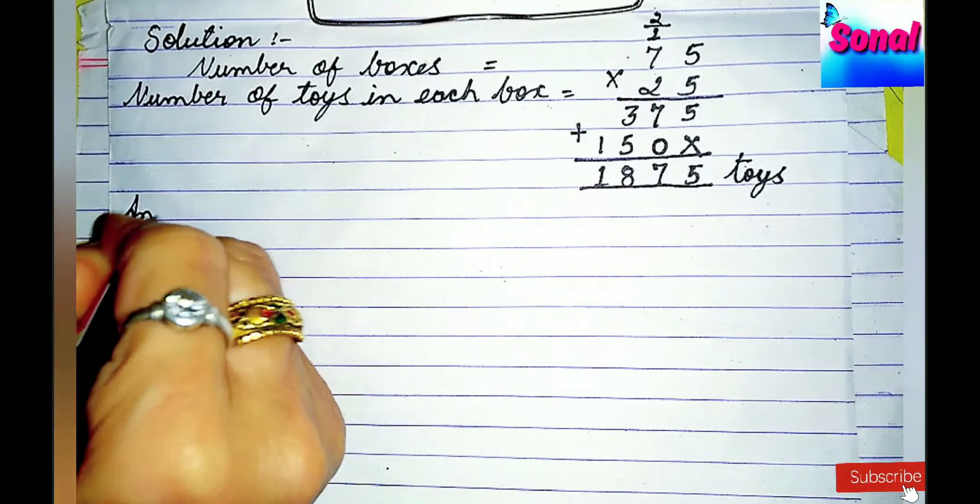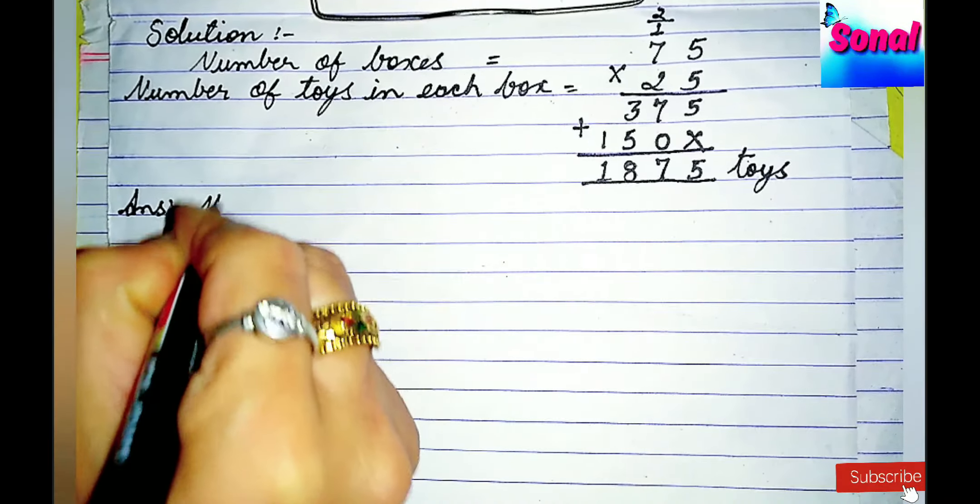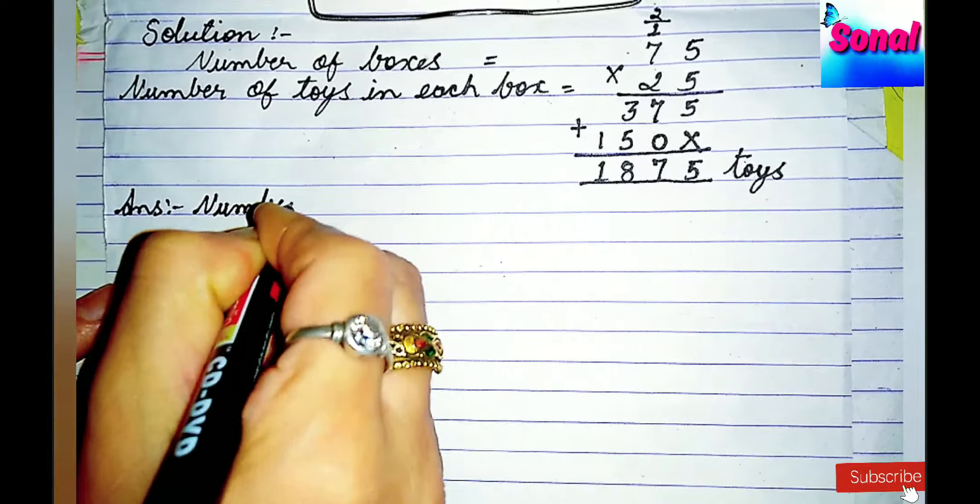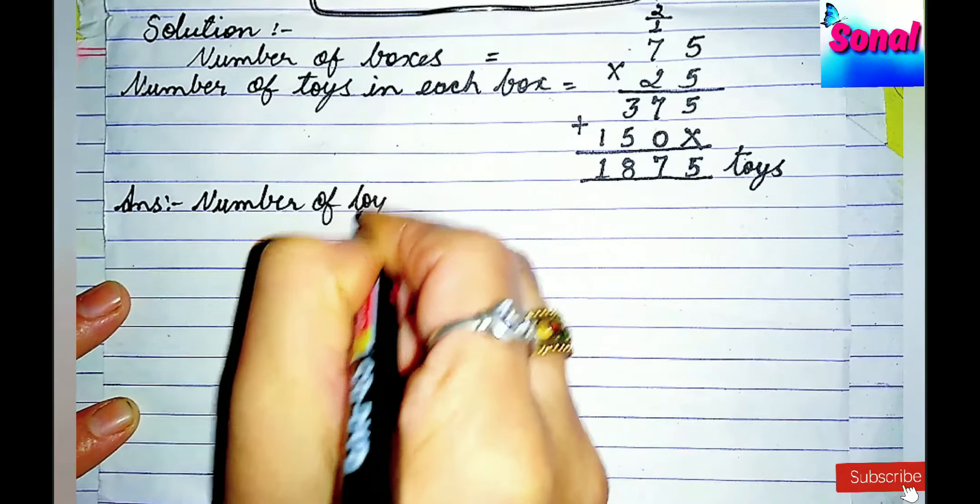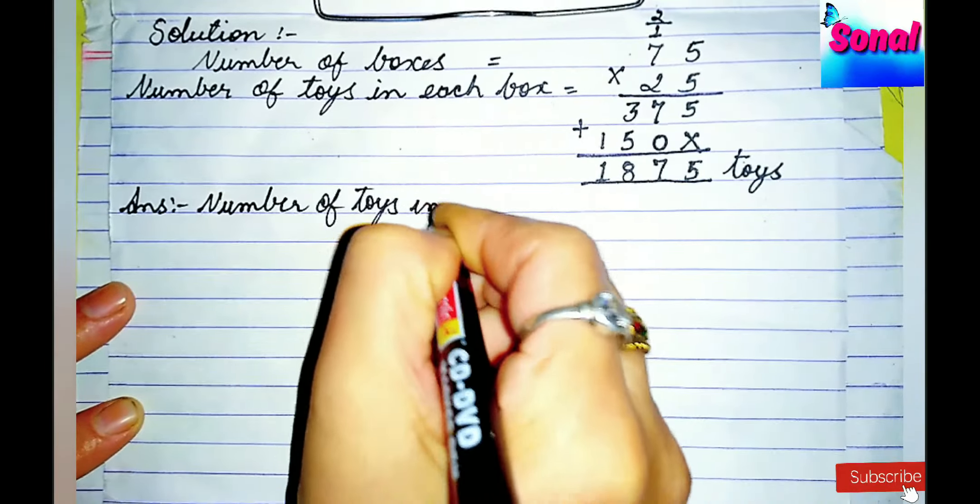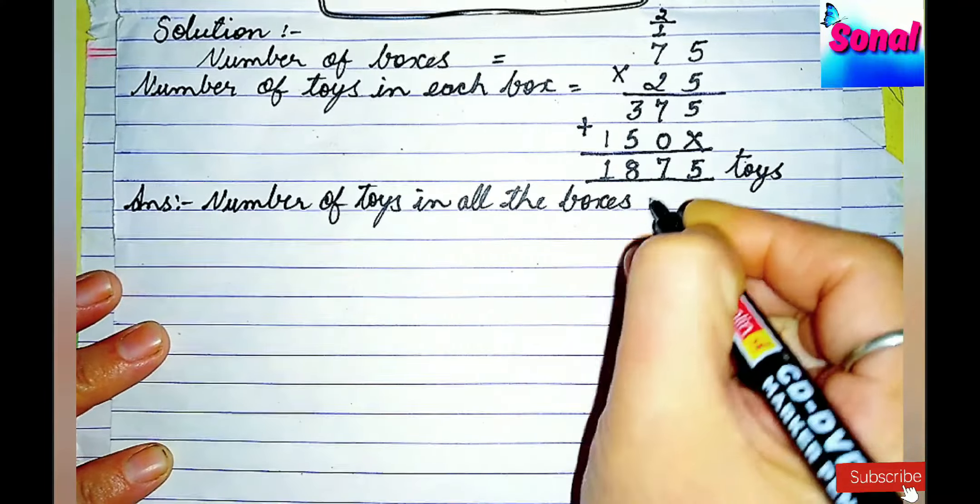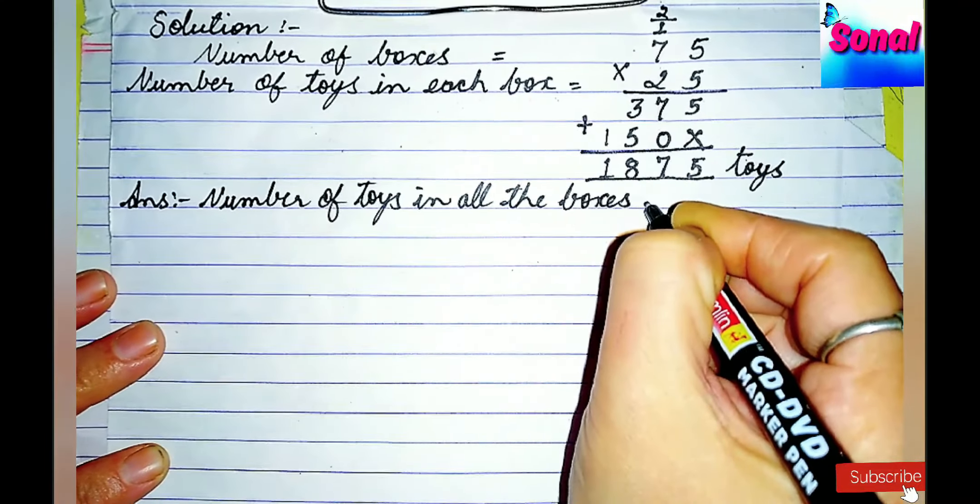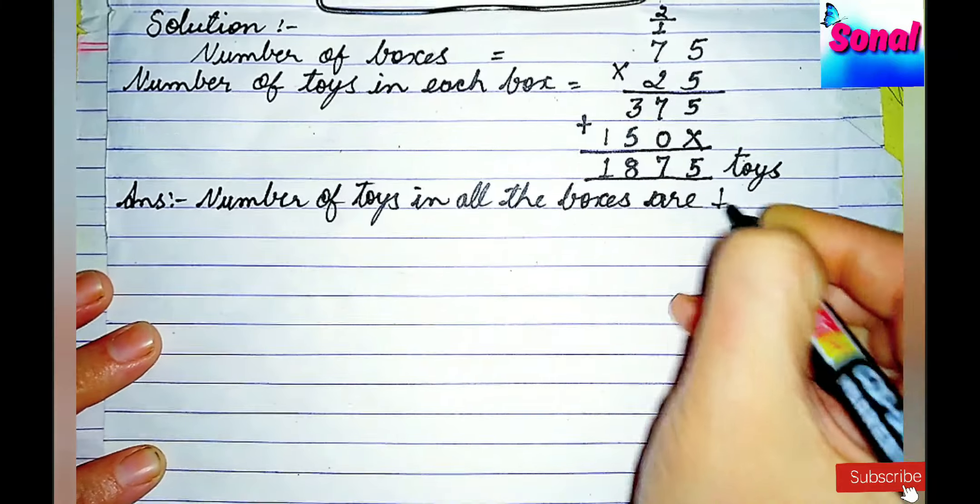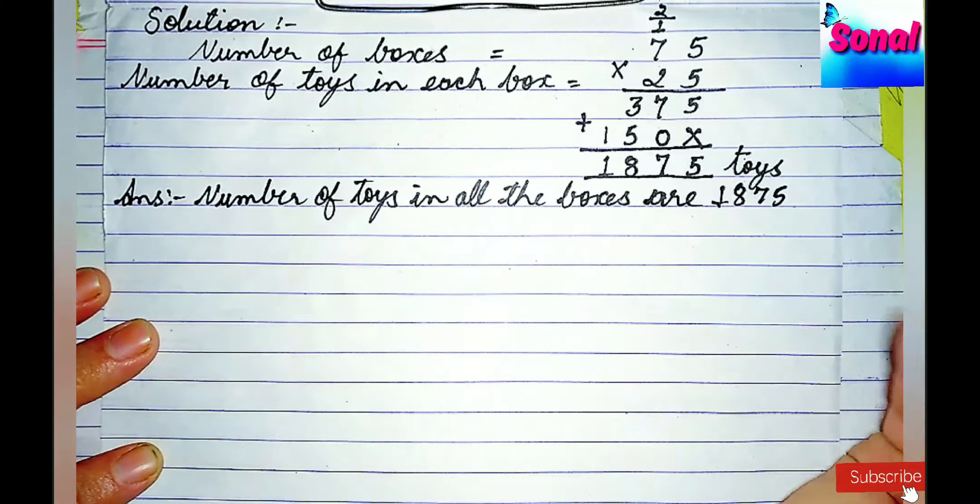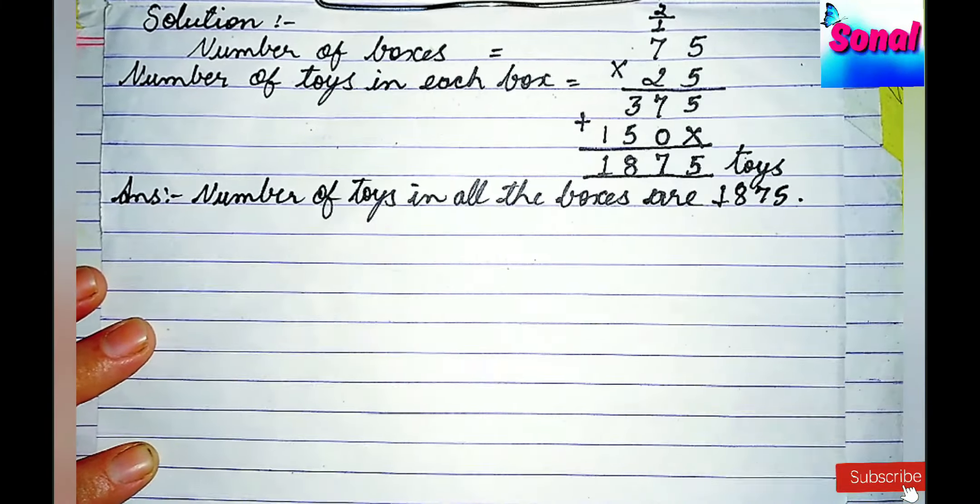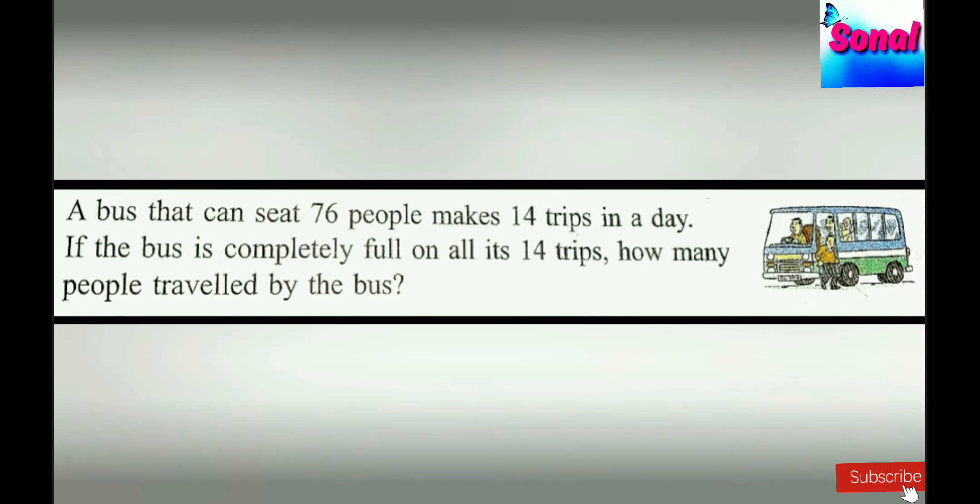The answer is number of toys in all the boxes are 1875. A bus that can seat 76 people makes 14 trips in a day. If the bus is completely full on all its 14 trips, how many people traveled by the bus?